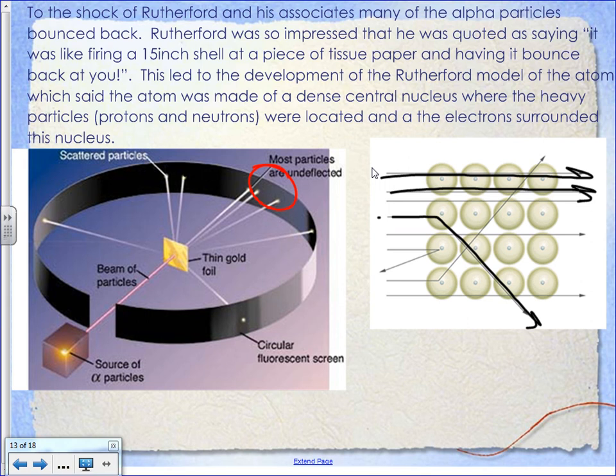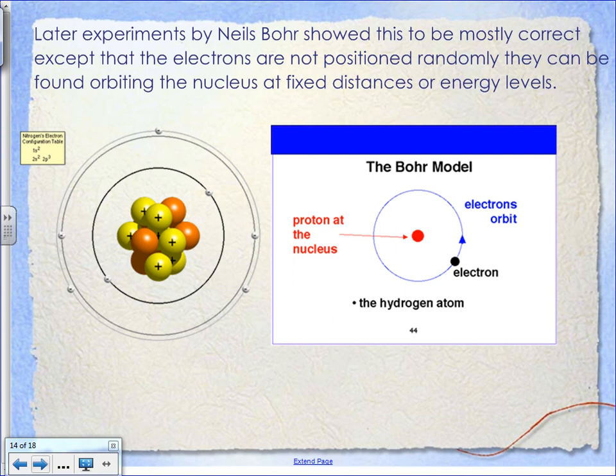There's lots of empty space in atoms, but that empty space is still too small for us to pass our finger through a solid material. Later on, a guy named Niels Bohr came along. Now that they'd decided the model involves a nucleus with electrons around it, the argument was: what do the electrons look like? Do they orbit like planets around the sun? Do they orbit randomly? Do they move up and down? That was the next big argument.